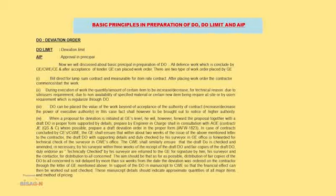Now what is DO? DO means Deviation Order. What is DO limit? DO limit means deviation limit which is fixed by the department. Now what is AIP? We will now discuss about the basic principle in preparation of DO.